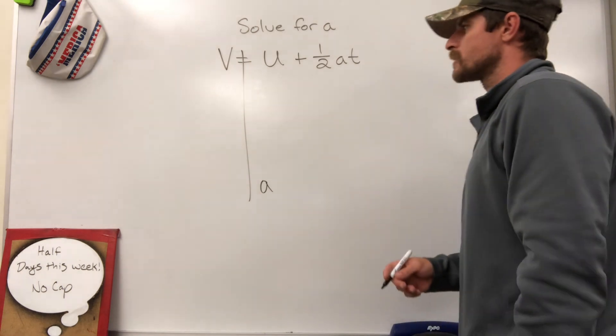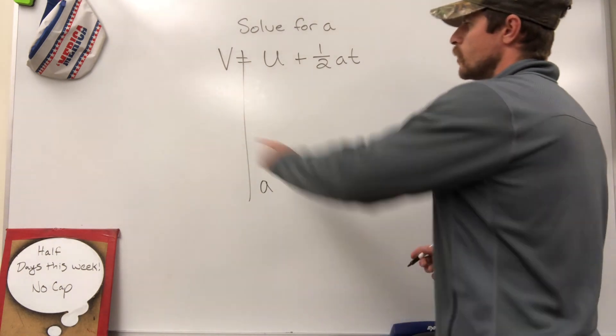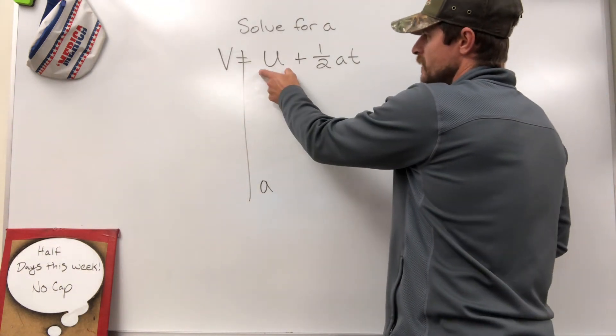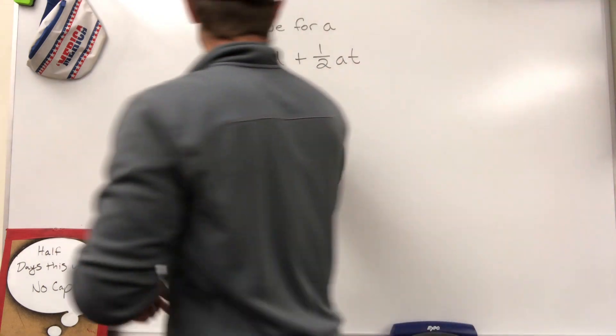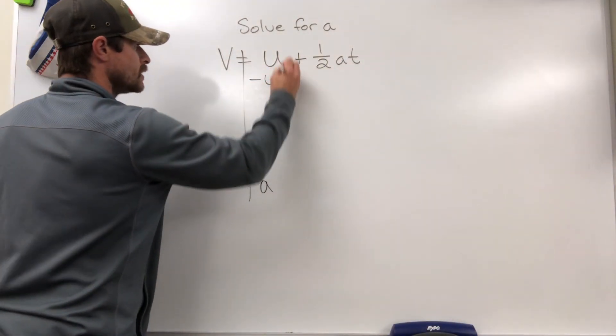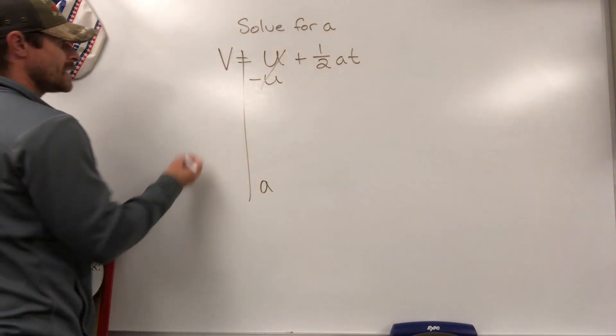How am I going to do that? I'm going to use my algebra skills and inverse operate some things to the other side. Let's get rid of this U for starters. That's a positive U, so I'll subtract U. That would eliminate it on the right side.